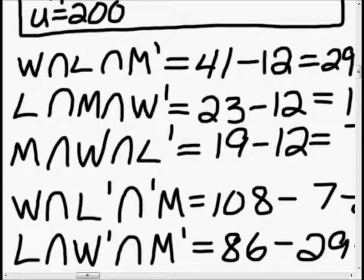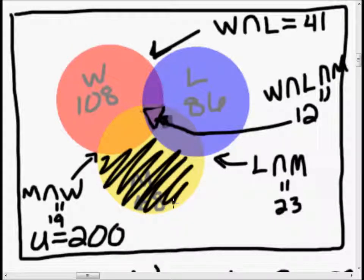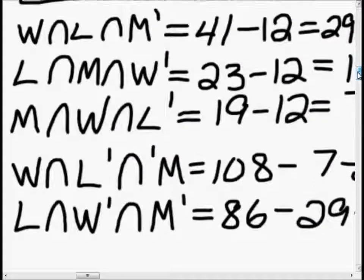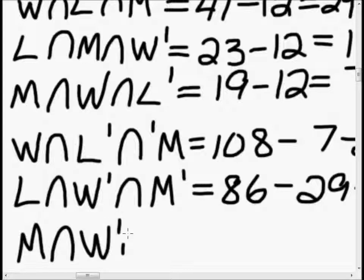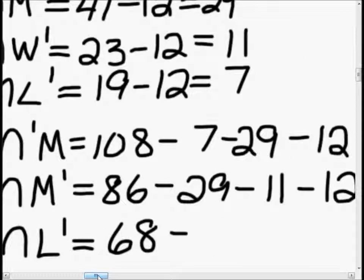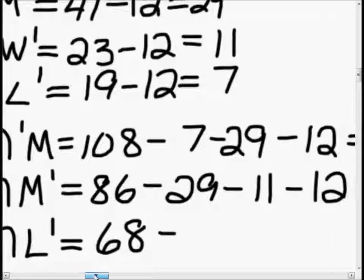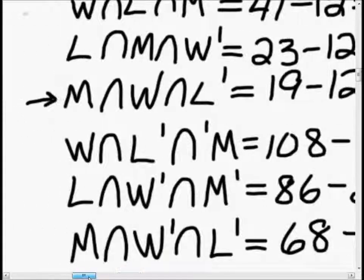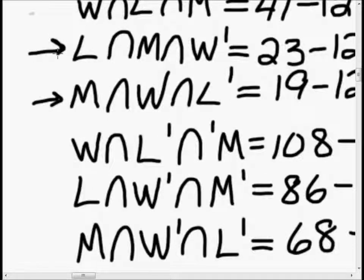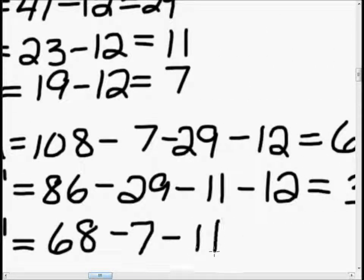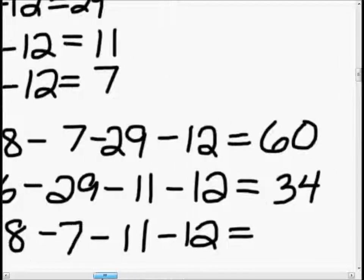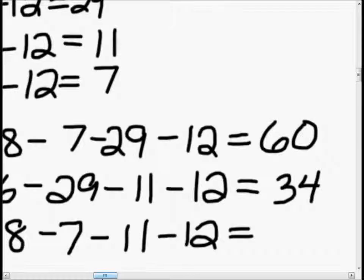We figured out two of the three areas. Now we need to figure out the people who are married, but not in the west and not in a large city. So this is married, not in west, not in large city. The total number married is 68. We subtract the people married and in the west but not in a large city — that's 7 — subtract people in the large city and married but not in the west — that's 11 — and subtract 12 again. So 68 minus 7 minus 11 minus 12 equals 38.